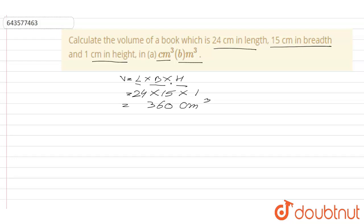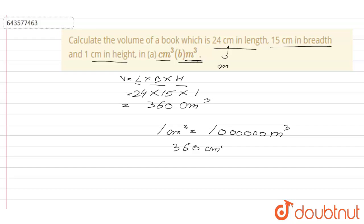To find the volume in meter cube, either we can convert all the dimensions from centimeter into meter, or we can use the unit conversion directly. One centimeter cube is equal to 10⁻⁶ meter cube. So here we choose the second method: 360 centimeter cube is equal to 360 divided by 10⁶ meter cube.